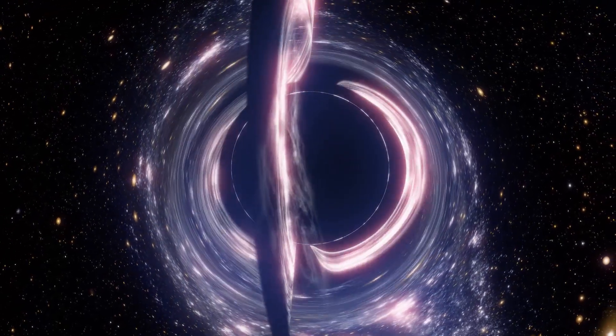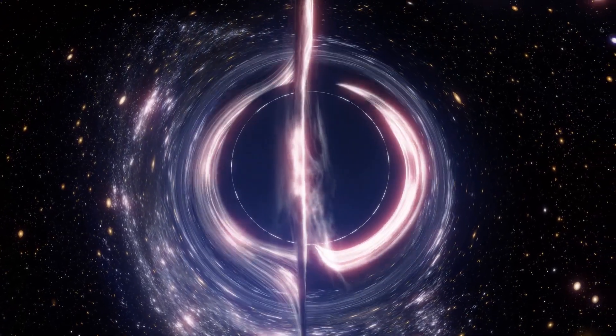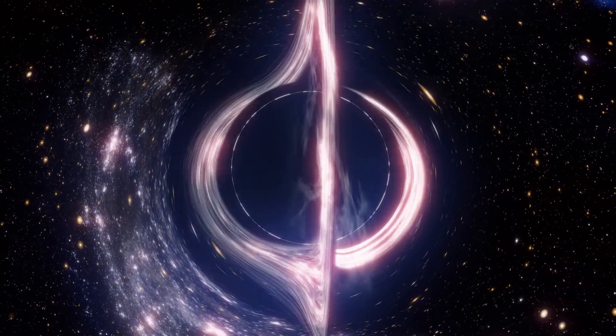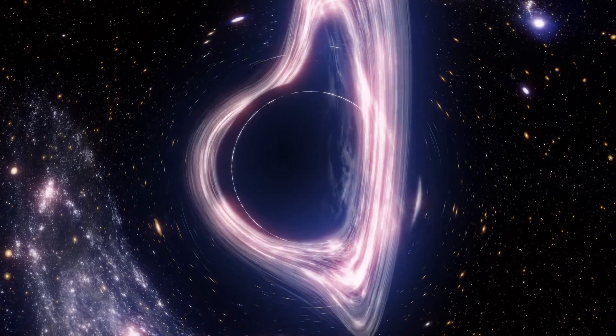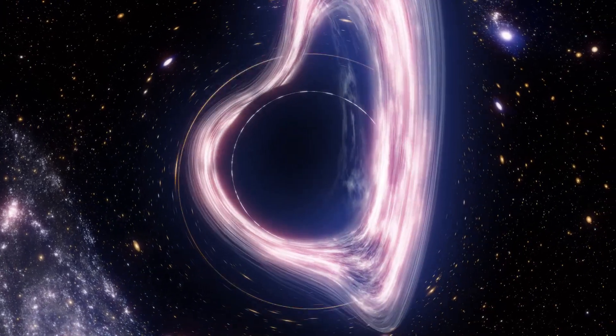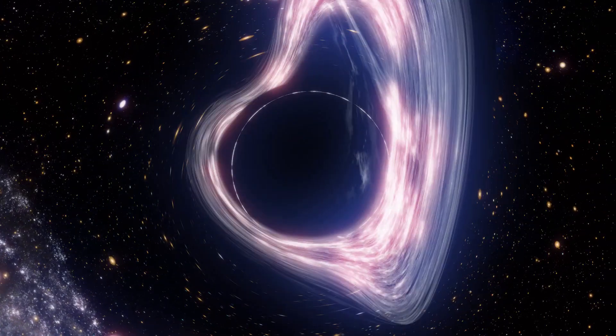Consequently, photons that fall inside can't escape, even though they travel at the speed of light. For that reason, someone looking from the outside sees the region beyond the event horizon as pitch black, because no photons from inside ever reach our eyes or telescopes.